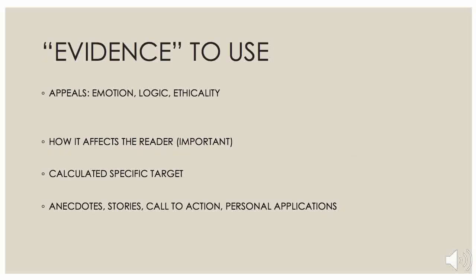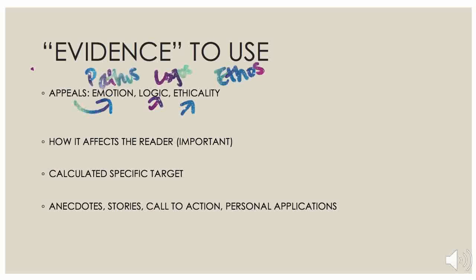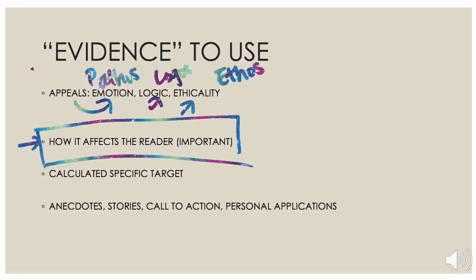So the evidence to use — basically what you should be looking for as you read comes in several things. You can use anything you want, but these are the most basic and also very useful things you can use in order to write a good essay on how the author persuades the audience. First thing: appeals. We have appeal to emotion, logic, and ethicality. Ethicality is just like honesty — like how true is this information? Are these statistics real? These are the things that people mostly use in order to fight for their argument. The main thing you should be focusing on in all the evidence that you find is how it affects the reader.